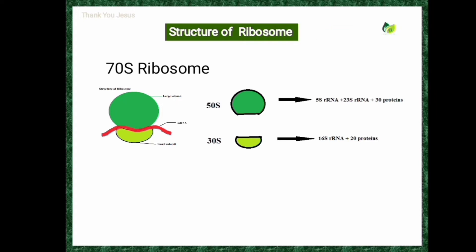Each subunit is made up of rRNA and ribosomal proteins. The 50S subunit — the larger subunit — is composed of 5S rRNA plus 23S rRNA plus 30 different types of proteins. The 30S subunit consists of 16S rRNA plus 20 different types of proteins. This is the composition of the 70S ribosome present in all prokaryotes as well as mitochondria and plastids.